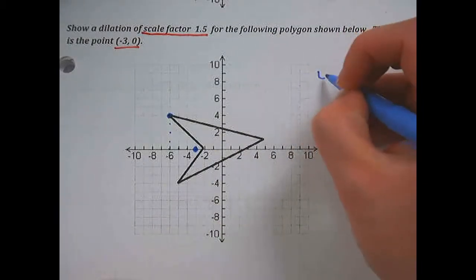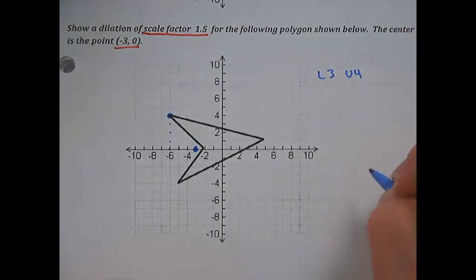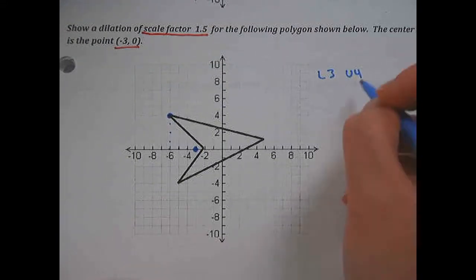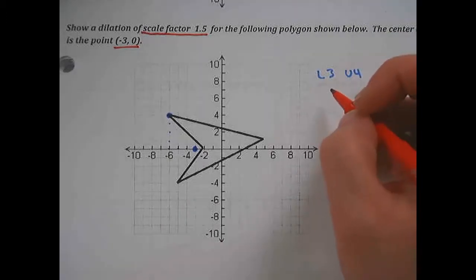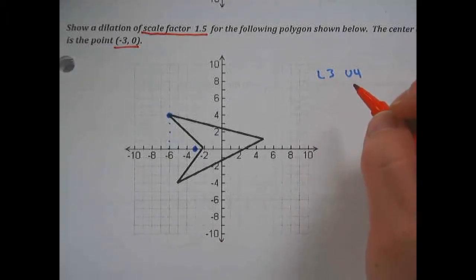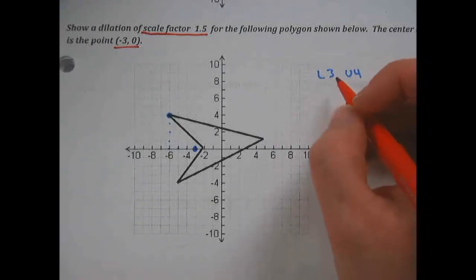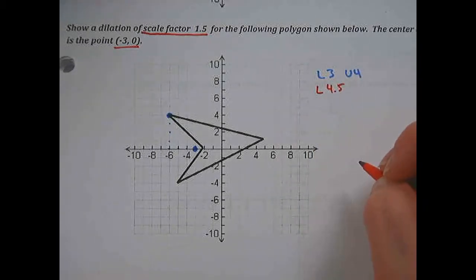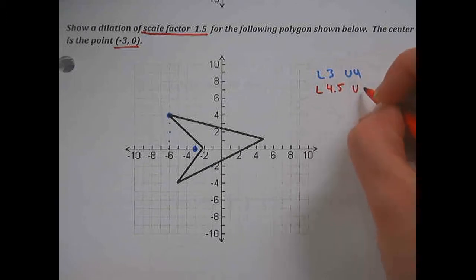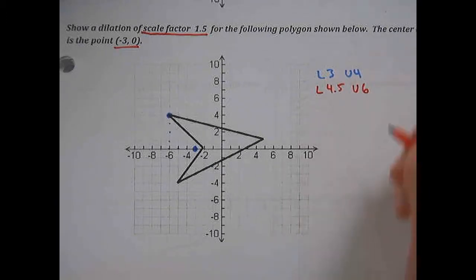So left 3 and up 4. Now for my new instructions, I'll take these old instructions and multiply them by my scale factor, 1.5. If you aren't great at multiplying with decimals in your head, feel free to use a calculator. Instead of left 3, we're going to go left 4.5 because 3 times 1.5 is 4.5. And instead of up 4, we're going to go up 6 since 4 times 1.5 is 6.